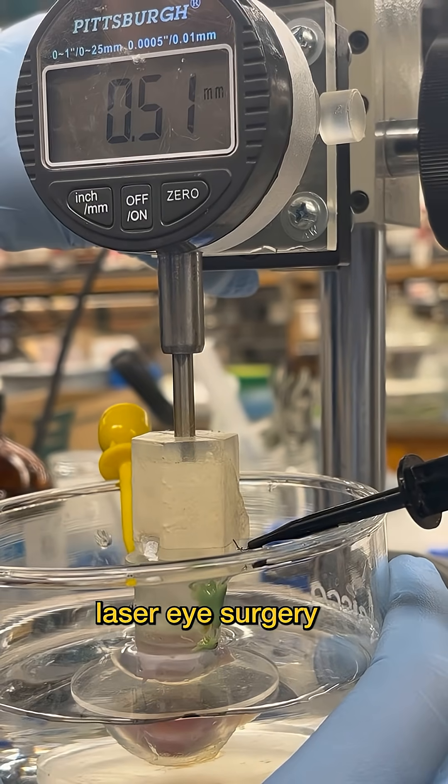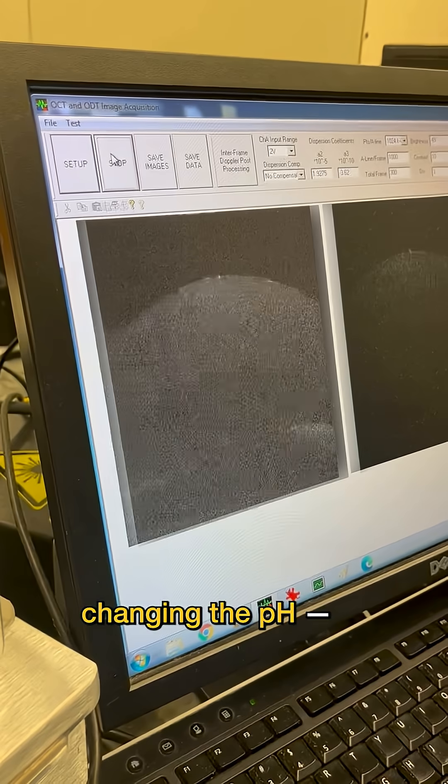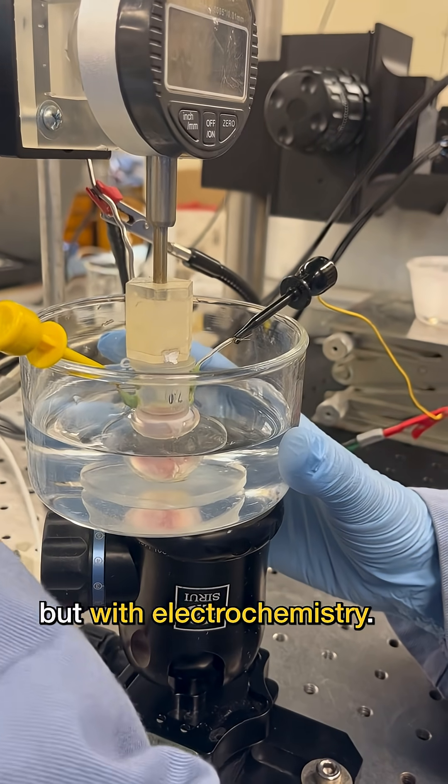This technique may one day make laser eye surgery obsolete. It reshapes the cornea by temporarily changing the pH, not with an acid or a base, but with electrochemistry.